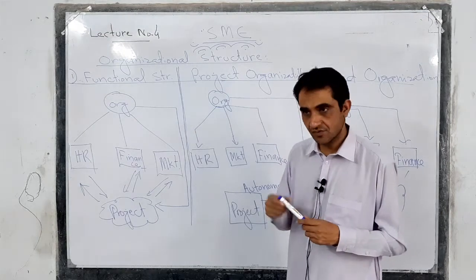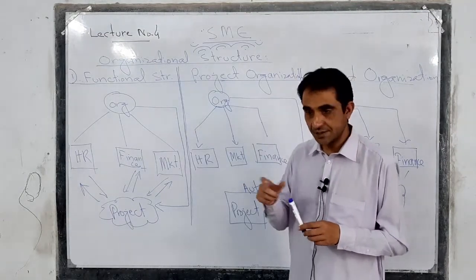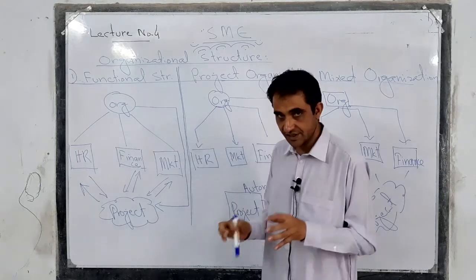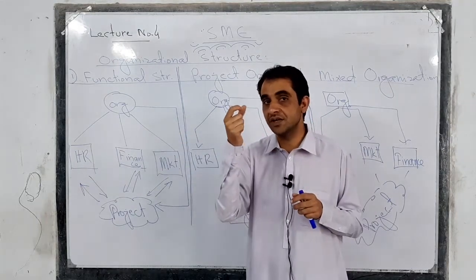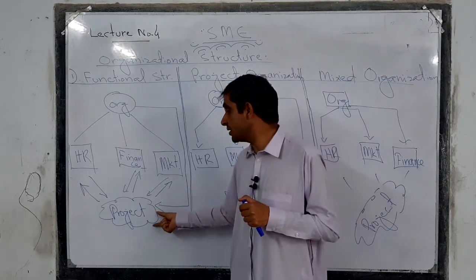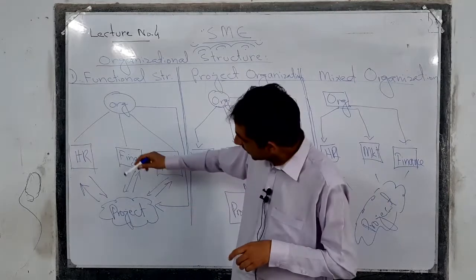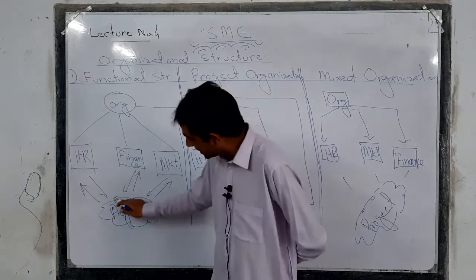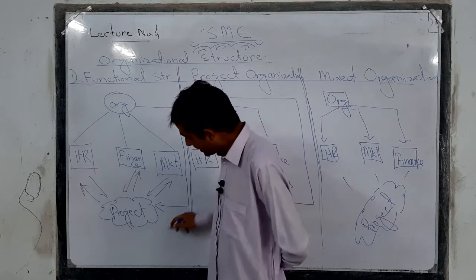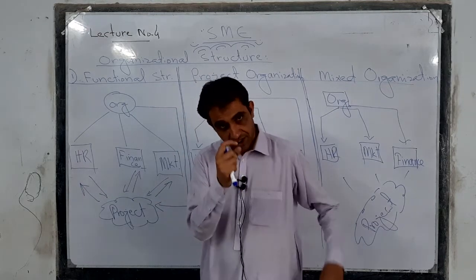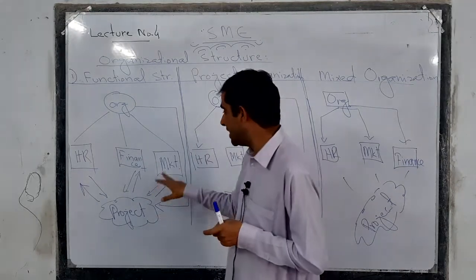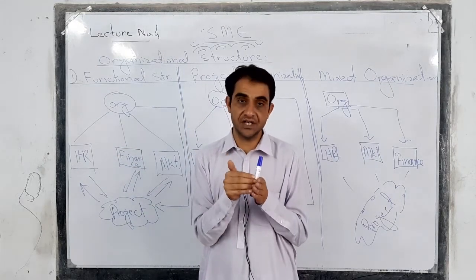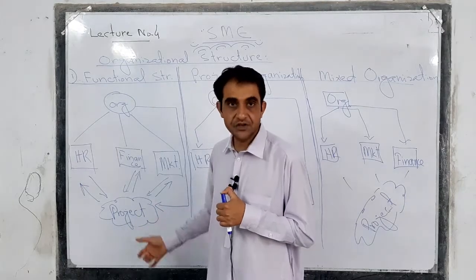Different organizations work on different projects at different times. When a functional structure organization gets a new project, they need people to work on it. So they take people from the HR department, the finance department, and the marketing department, and they form a project team. This project team, made up of people contributed from different departments, works on the specific project.